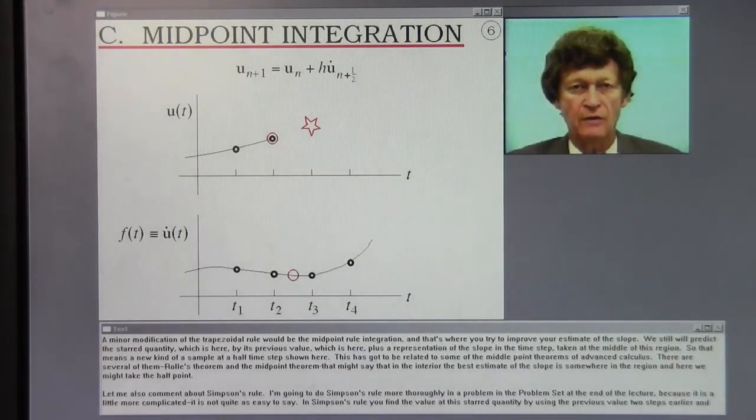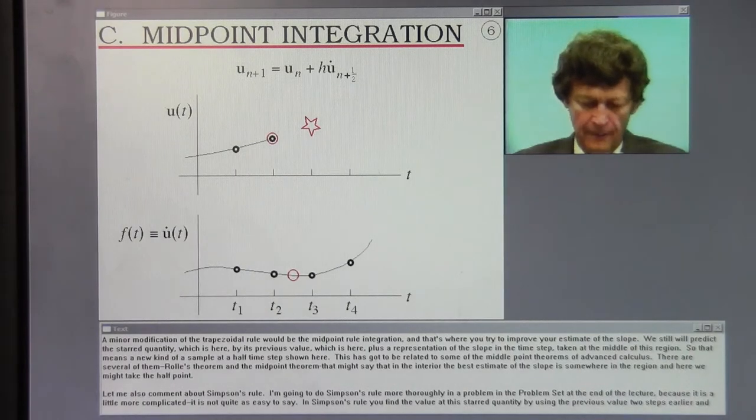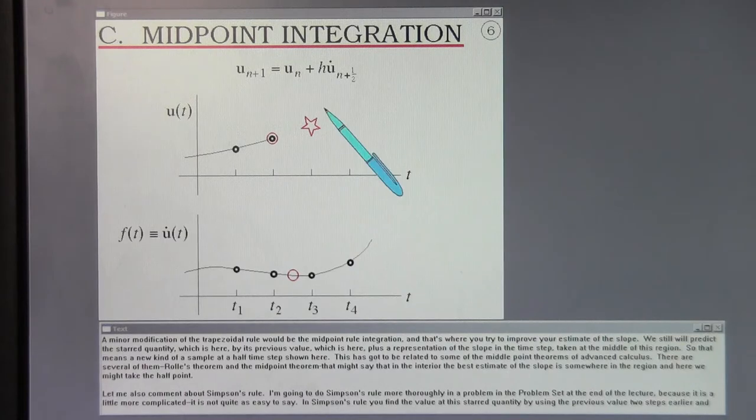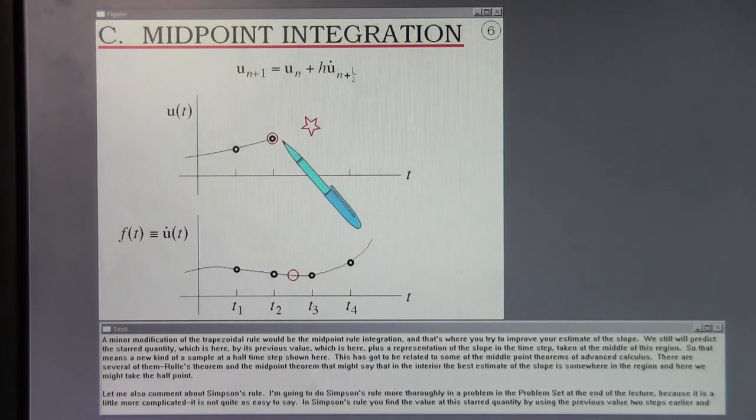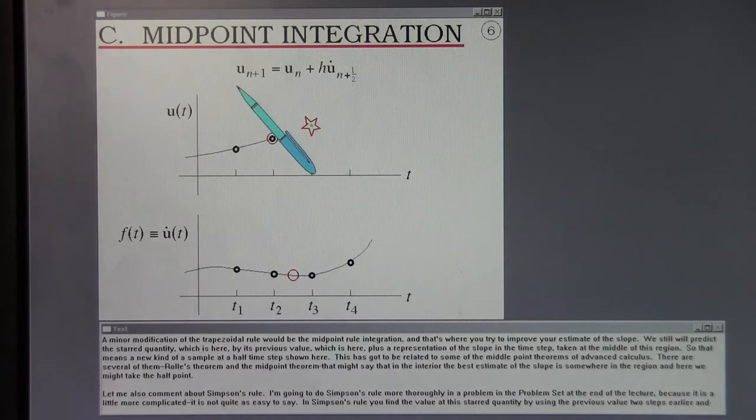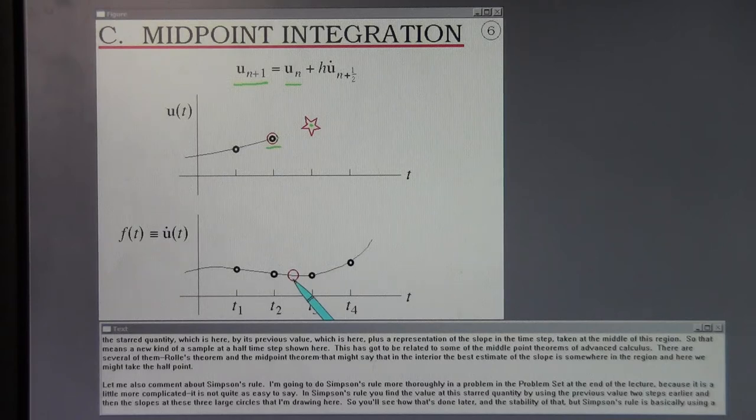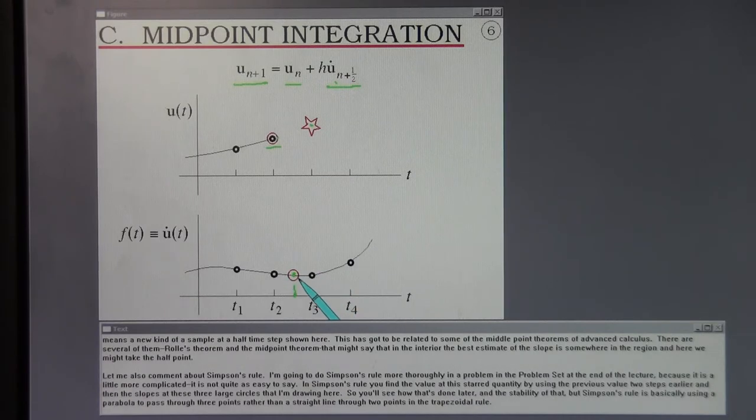This is a very stable way to integrate. It's a very brute force approach and has been used a lot historically. A minor modification of the trapezoidal rule would be the midpoint rule integration. And that's where you try to improve your estimate of the slope. We still will predict the star quantity by its previous value plus a representation of the slope in the time step taken at the middle of this region. This has got to be related to some of the midpoint theorems out of advanced calculus.